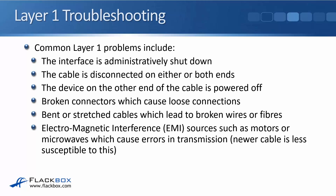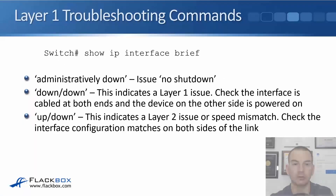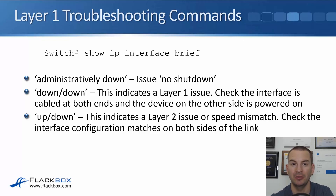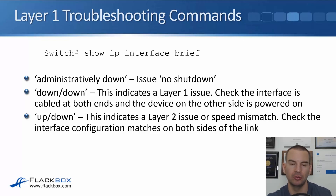EMI is not such a big problem if you've got newer cable — Cat7 has much better shielding than Cat3. The useful troubleshooting command at layer 1 is show IP interface brief. When you run it, it will show you the status of the interface. If it shows administratively down, that means you haven't entered the no shutdown command, so do that to bring the interface up.